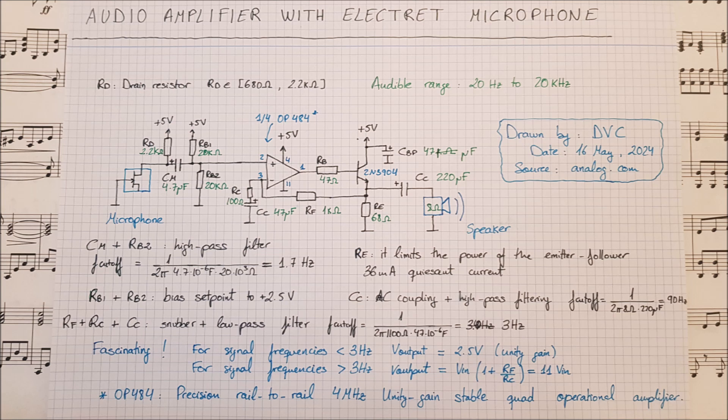It's unity-gain stable, so we can use it as a buffer, and there are four amplifiers within the same package. The composite amplifier has been designed brilliantly. When you look at it, you see it's a non-inverting amplifier. But a non-inverting amplifier has the inverting input — pin number 3 — connected through a resistor to ground. Here we have a resistor and a capacitor. We have resistor RF, RC, and capacitor CC in the feedback path, and that makes a filter — a low-pass filter with a cutoff of 3 Hz.